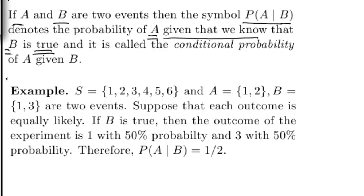Here's a simple example. My sample space consists of 1 through 6, so the experiment could be to toss a dice. I have two events: event A consisting of {1, 2} and event B consisting of {1, 3}. I assume that each outcome is equally likely, which means P(A) is 1/3 and P(B) is 1/3. If you want to compute the conditional probability of A given B, you have to think like this.